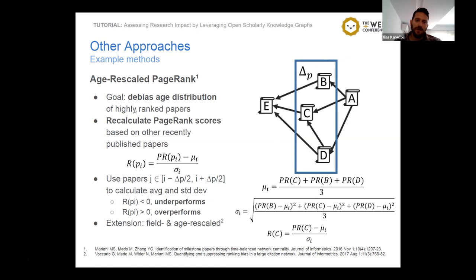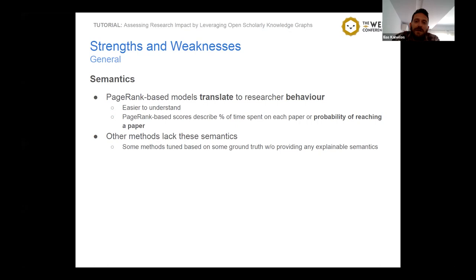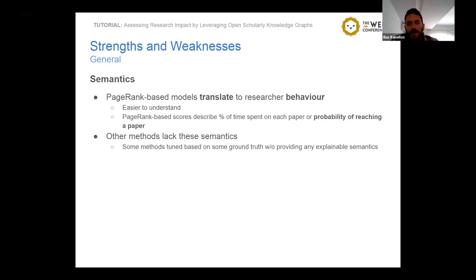At this point, I will conclude the literature examples and briefly discuss a few strengths and weaknesses of various methods. The first important strength concerns semantics. In the case of PageRank-based models, we have easily translatable behavior of a researcher into natural language, making it easier to understand what the score represents — it describes the probability of finding a paper under a particular behavior model. Other types of methods lack these semantics and it is not always easy to explain the results.